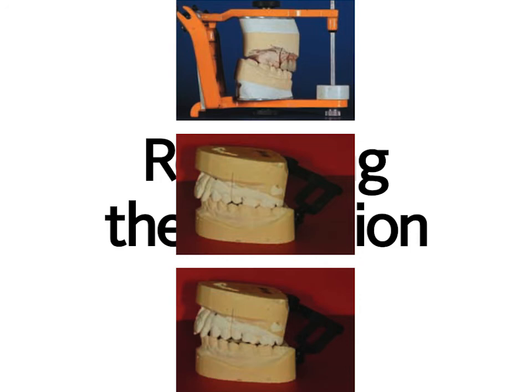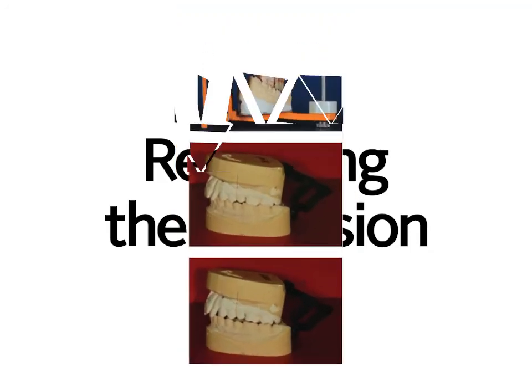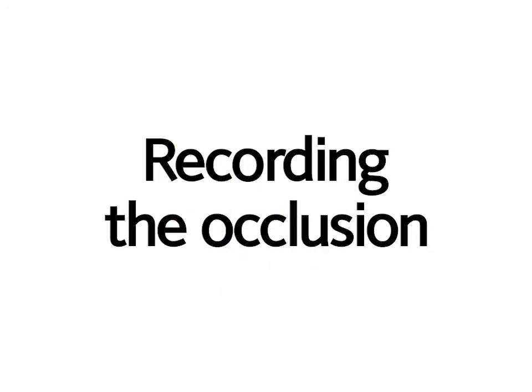Sometimes there is no need for any occlusal record, and it is often possible to place the models together entirely satisfactorily in ICP. When there may be some doubt about ICP, an occlusal record is made in wax or one of the other materials.